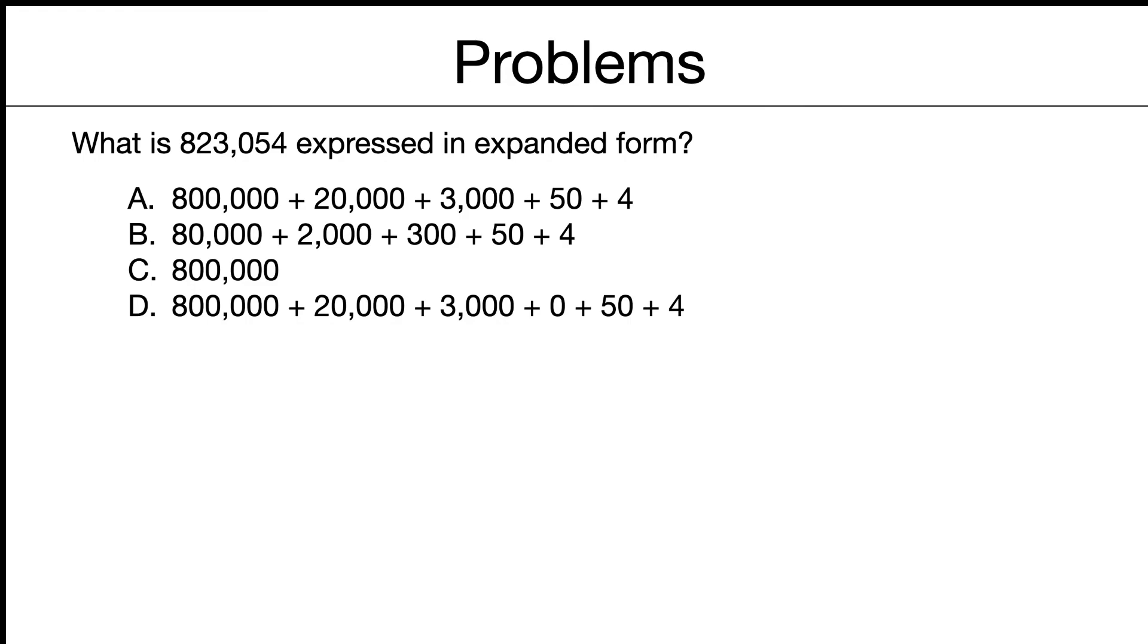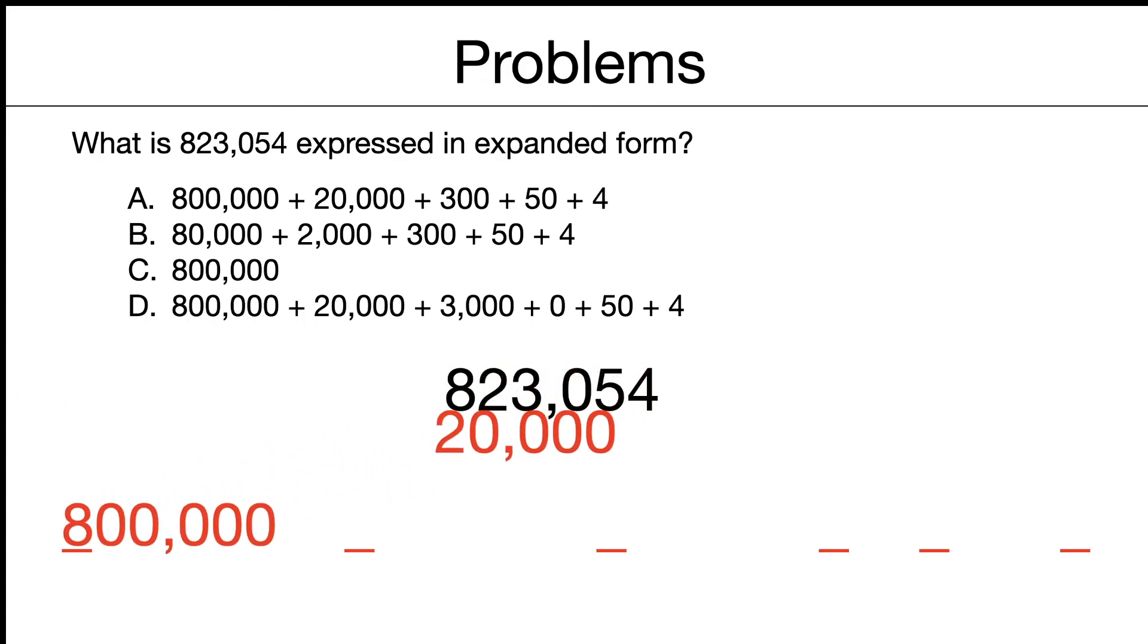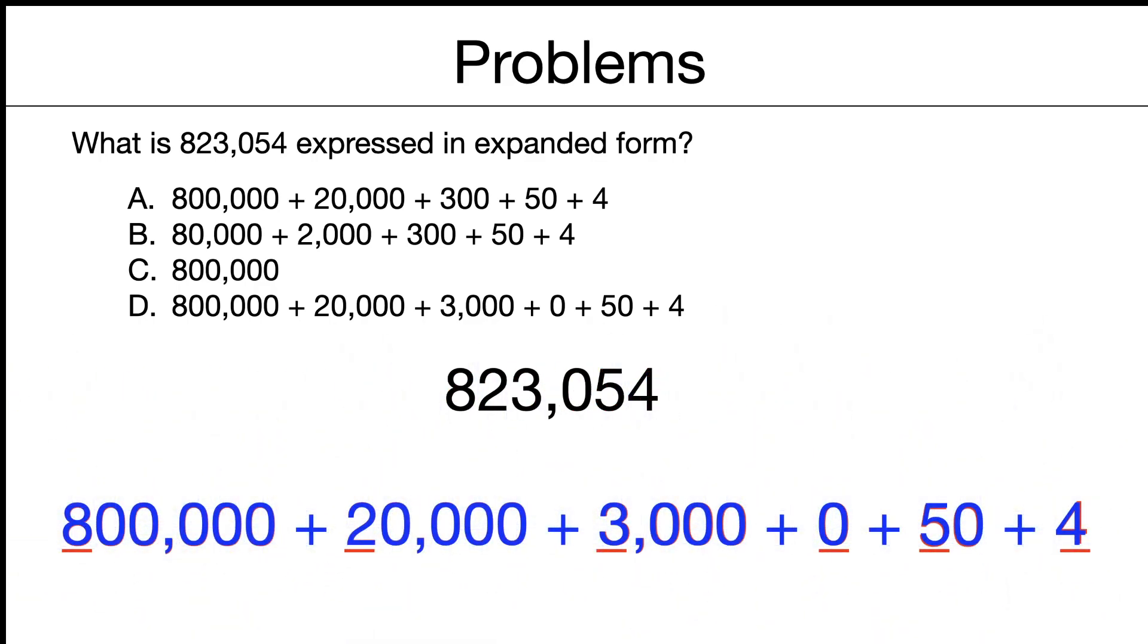What is 823,054 expressed in expanded form? Pause if you like. Well, we write the number and count our digits. So our answer is going to have six digits. We'll show the zero. So the eight is going to be 800,000. The two is 20,000. We've got 3,000 zeros for our hundreds, 50 and four. And let's put in our addition symbols. I think it's D. Sometimes there's a lot of numbers to look at. There we go. So our answer is D in expanded form.